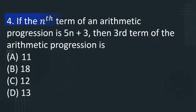If the nth term of an arithmetic progression is 5n plus 3, then the third term of the arithmetic progression is option A: 11, option B: 18, option C: 12, option D: 13.